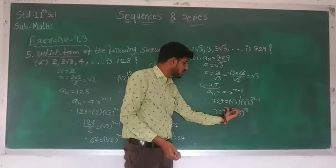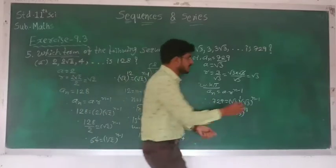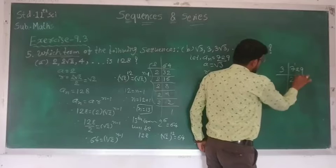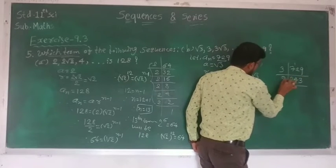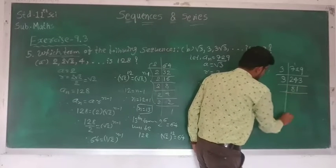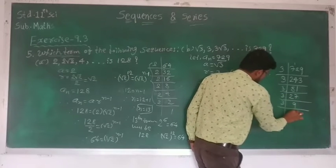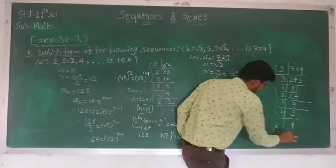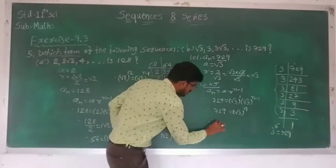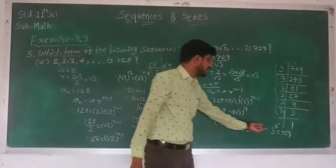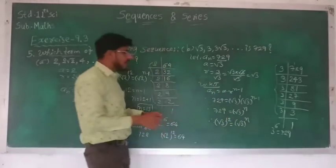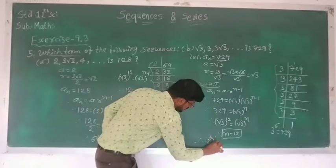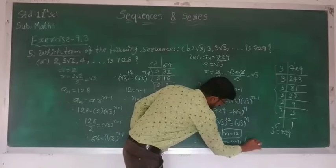The question is to find the value of n, so we have to make the same value. Find factors of 729: 3×3 six times, so 3 raise to 6 equals 729. But here we have √3 on the right-hand side, so we can write √3 raise to 12, which is twice of 6. Therefore √3 raise to 12 equals √3 raise to n. Comparing powers as the base is same, we get n equals 12. Therefore the 12th term will be 729.